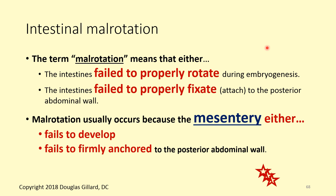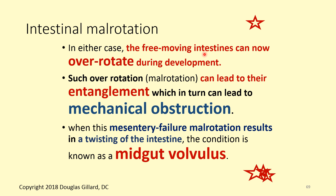Malrotation means either the intestine failed to properly rotate during embryogenesis — so the mesentery never formed — or it rotated correctly but failed to fixate to the posterior abdominal wall, meaning something went wrong with the mesentery's attachment. In either case, the intestines can over-rotate, get tangled up, and create a mechanical obstruction. When mesentery failure or malrotation results in obstruction, it's called a midgut volvulus. Here's an example where the intestines were too loose and twisted around the cecum, creating a massive tangle.